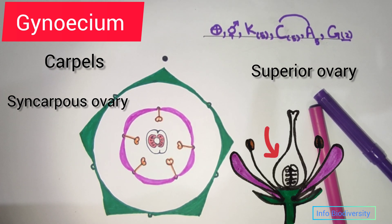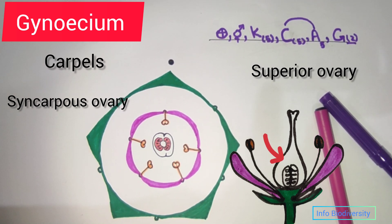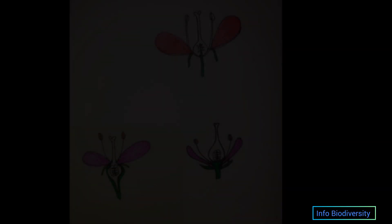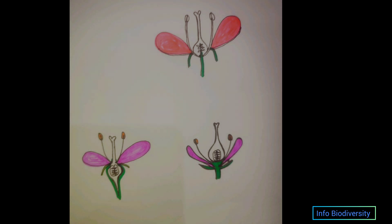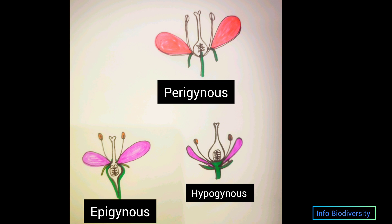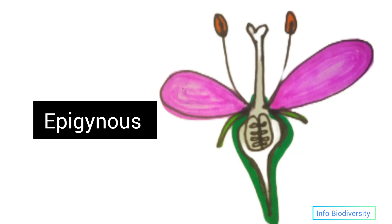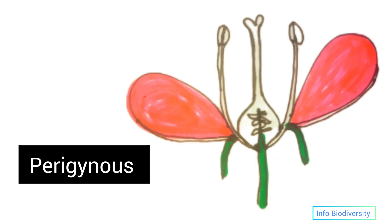A superior ovary means the other floral parts are located below the ovary; this is represented by an underline and the flower is called hypogynous. Based on ovary position, flowers are divided into three types: hypogynous flowers, where the ovary is superior and other parts are inferior; epigynous flowers, where the ovary is inferior and other parts are above it; and perigynous flowers, where other parts are located around the ovary — neither above nor below.